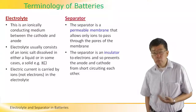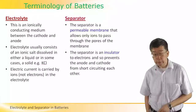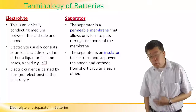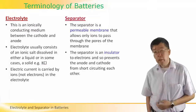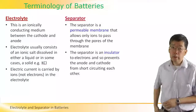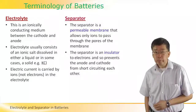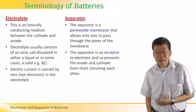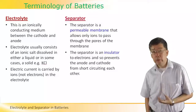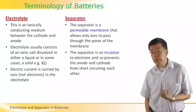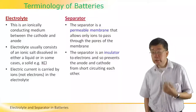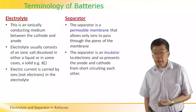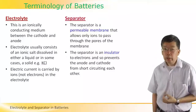Most of us are very familiar with positive and negative electrodes, but within any battery there are two other very important components we may not be so familiar with. The first one is the electrolyte, shown on the left. The electrolyte is a very essential part of any battery — it is an ionically conducting medium, usually in the form of a semi-solid paste, located between the cathode and the anode.